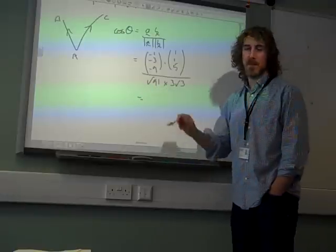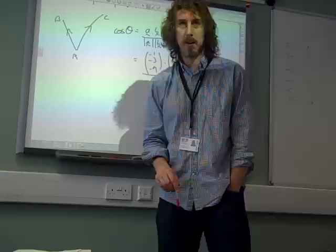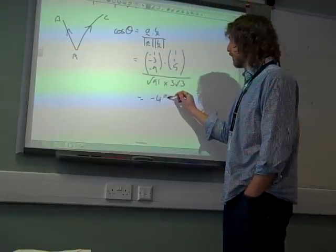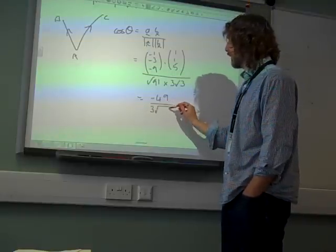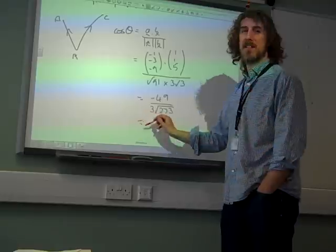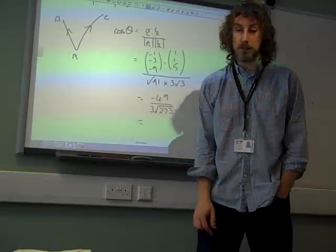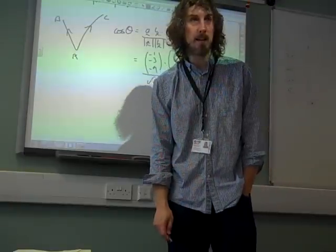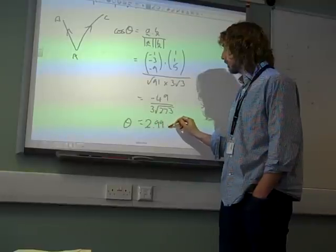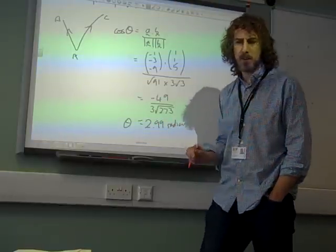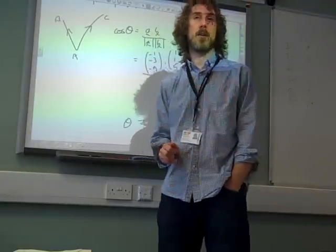And if we work that out, we get negative 49 over √(3√27 × √91). And if you do that, it's negative, so we're going to get an obtuse angle. It is 2.99 radians, which is 171.31 degrees.